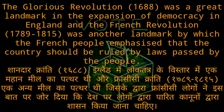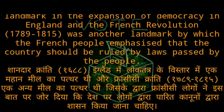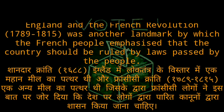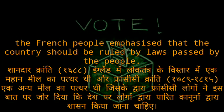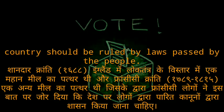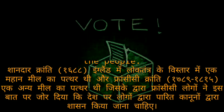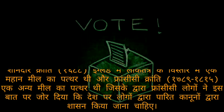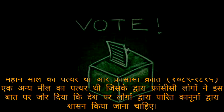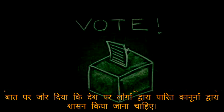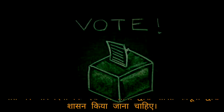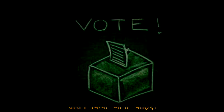The Glorious Revolution of 1688 was a great landmark in the expansion of democracy in England. The French Revolution of 1789–1815 was another landmark by which the French people emphasized that their country should be ruled by laws passed by the people.